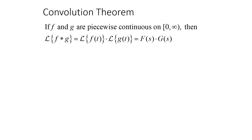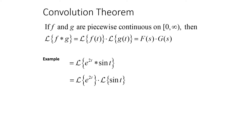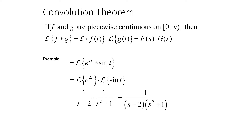Let's look at an example where we apply the convolution theorem. Find the Laplace transform of e to the 2t star sine of t — the Laplace transform of the convolution of e to the 2t and sine of t. Our convolution theorem says we can split it up into the product of the Laplace transform of each term: 1 over s minus 2 times 1 over s squared plus 1, giving us 1 over s minus 2 times s squared plus 1.